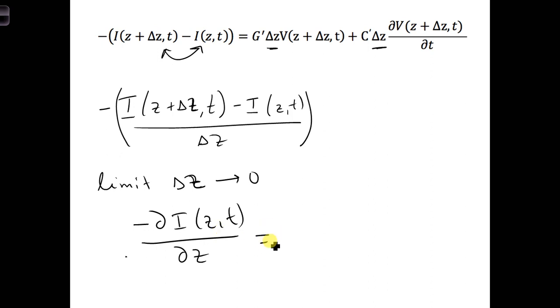And we can also get the same on the right. So we have G prime, the delta Z went away when we divided the entire equation. And we get C prime, partial derivative V with respect to t, because in time, we can also have time evolve continuously.